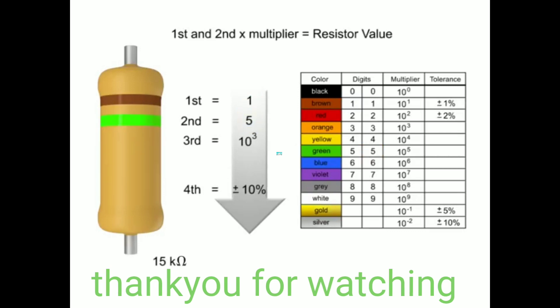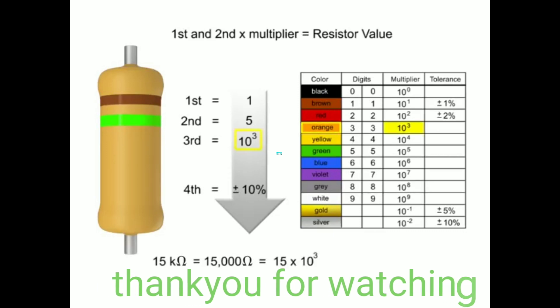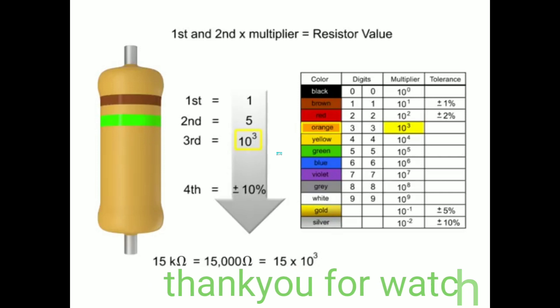The resistor value is fifteen thousand ohms, so we need to add three zeros to fifteen. Three zeros is a thousand, so we need to have a multiplier of ten to the third. Thus the third band would need to be orange.